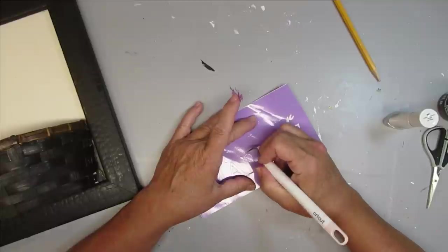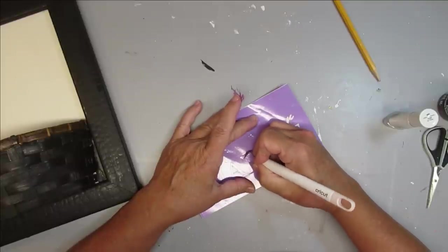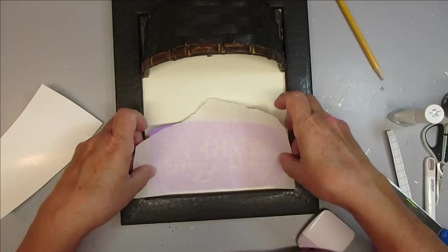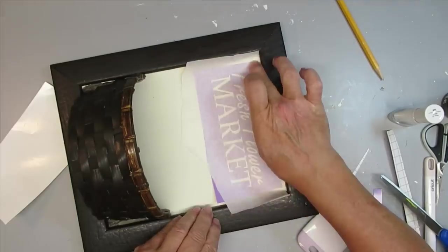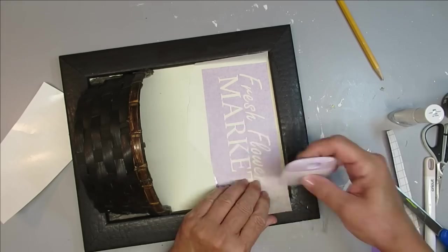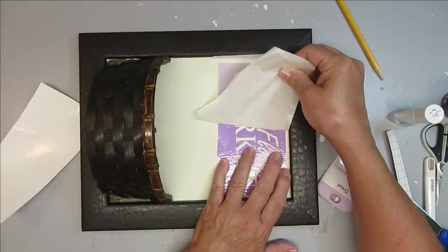I'm just weeding out the letters first because this is actually reverse weeding. You want to be weeding out what you want to stencil, not the background. Then I'll just grab a piece of my transfer tape and transfer that right to the top of the sign.